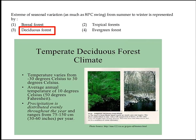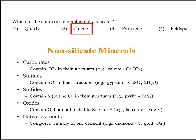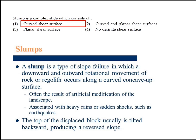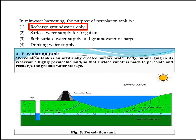Extreme seasonal variation from summer to winter is represented by deciduous forest. Option 3 is the right answer. Which common mineral is not a silicate? Calcite. Option 2 is the right answer. A slump is a complex slide which consists of a curved shear surface. Option 1 is the right answer. In rainwater harvesting, the purpose of a percolation tank is to recharge groundwater only. Option 1 is the right answer.